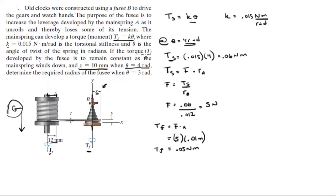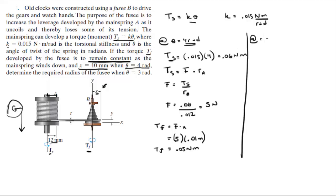They tell you that Tf developed by the fusee remains constant no matter where we are. Since it remains constant, at θ = 3 radians, Tf is still 0.05 Newton-meters.